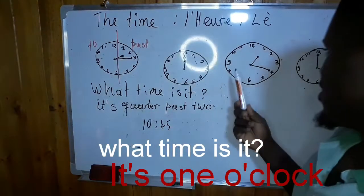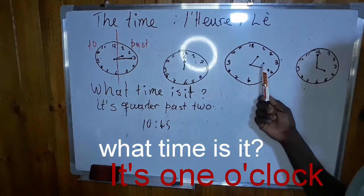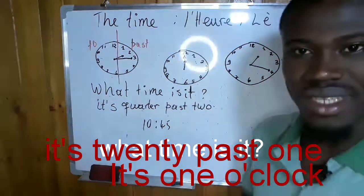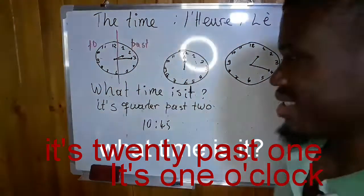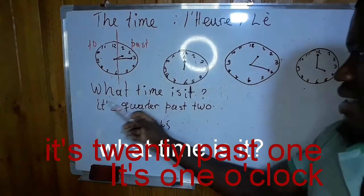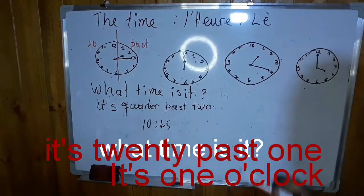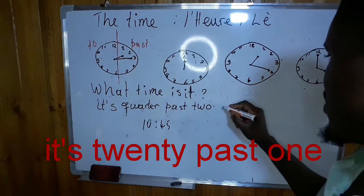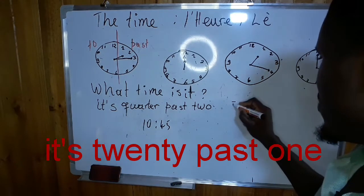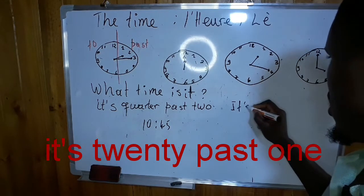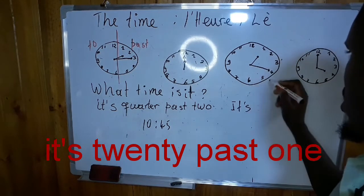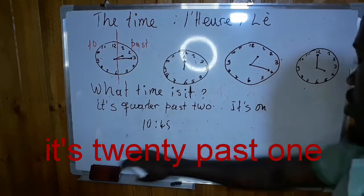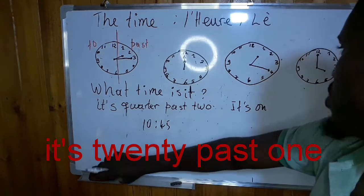But when the clock has 20 minutes past the hour — what time is it? How do we respond to 'what time is it'? It's 20 past one.